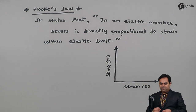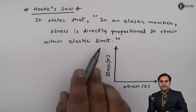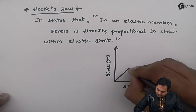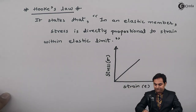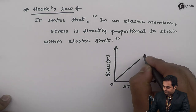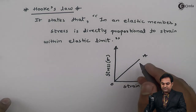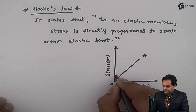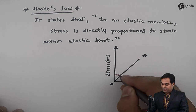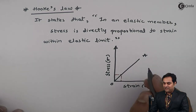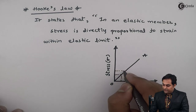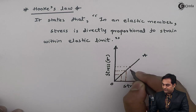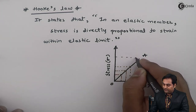In an elastic member, stress is directly proportional to strain within the elastic limit. The graph is linear from 0 to A. Within this region, when I increase stress, strain also increases; again if I increase stress, strain increases, and so on up to the final value.